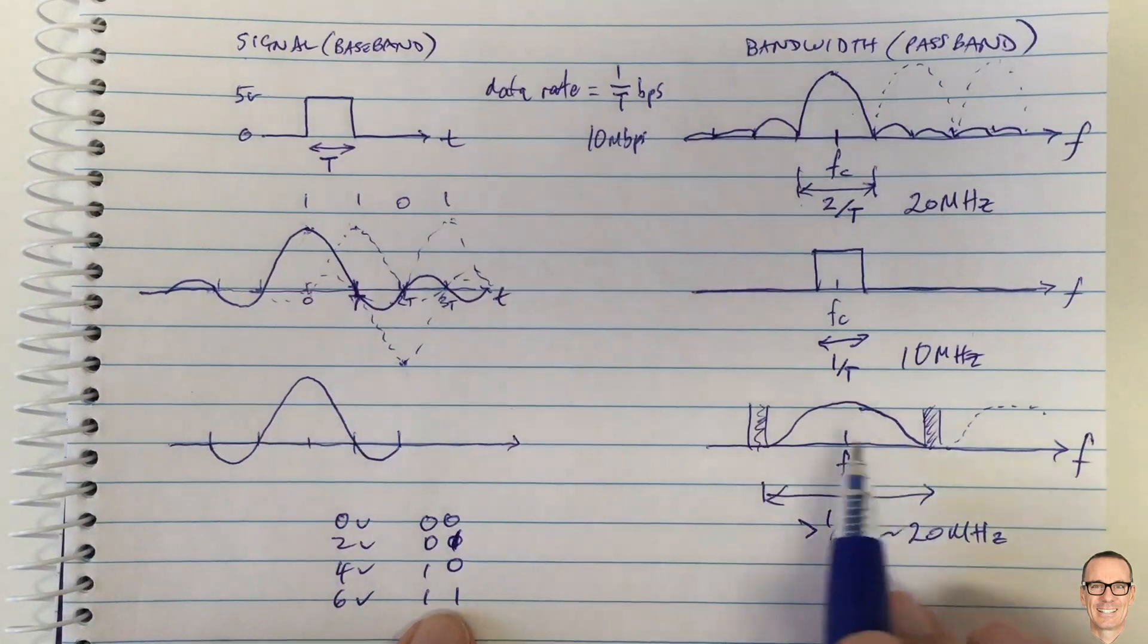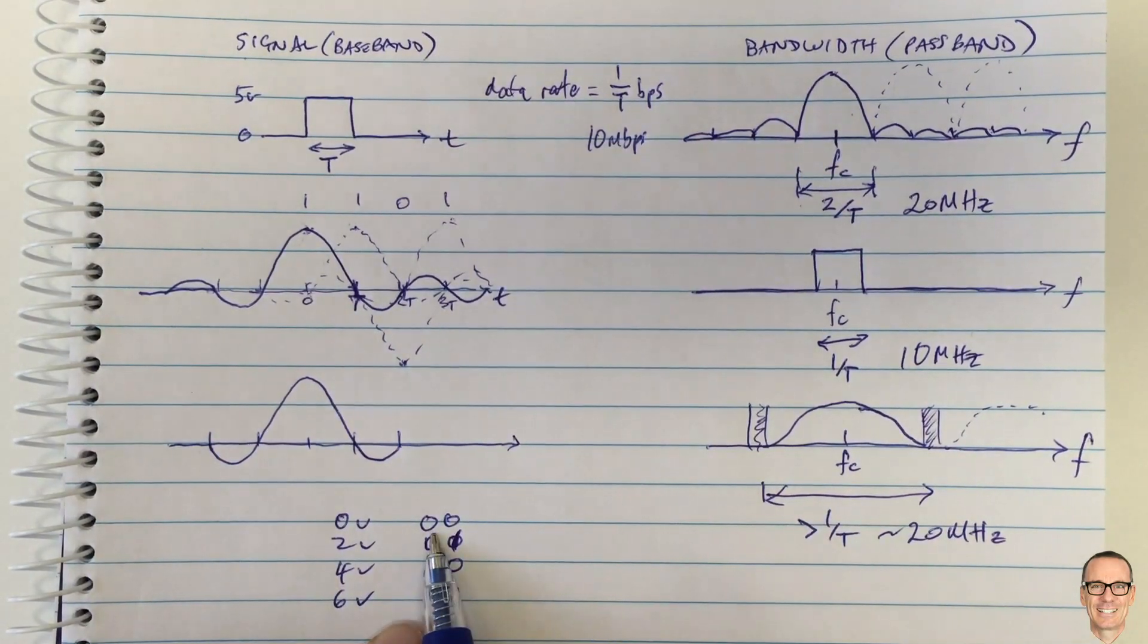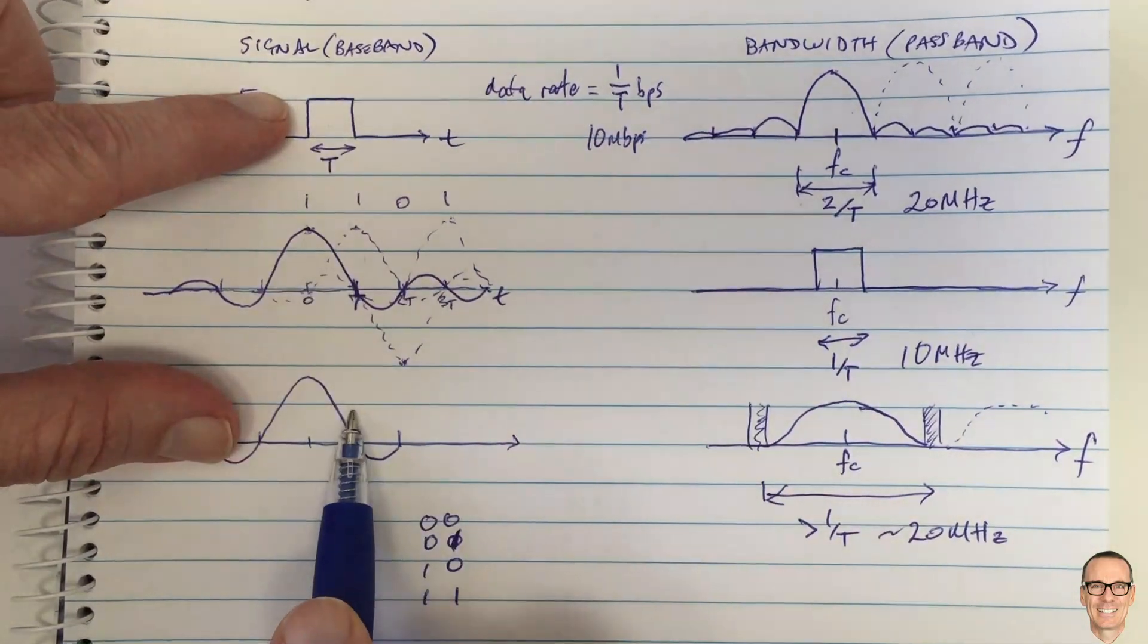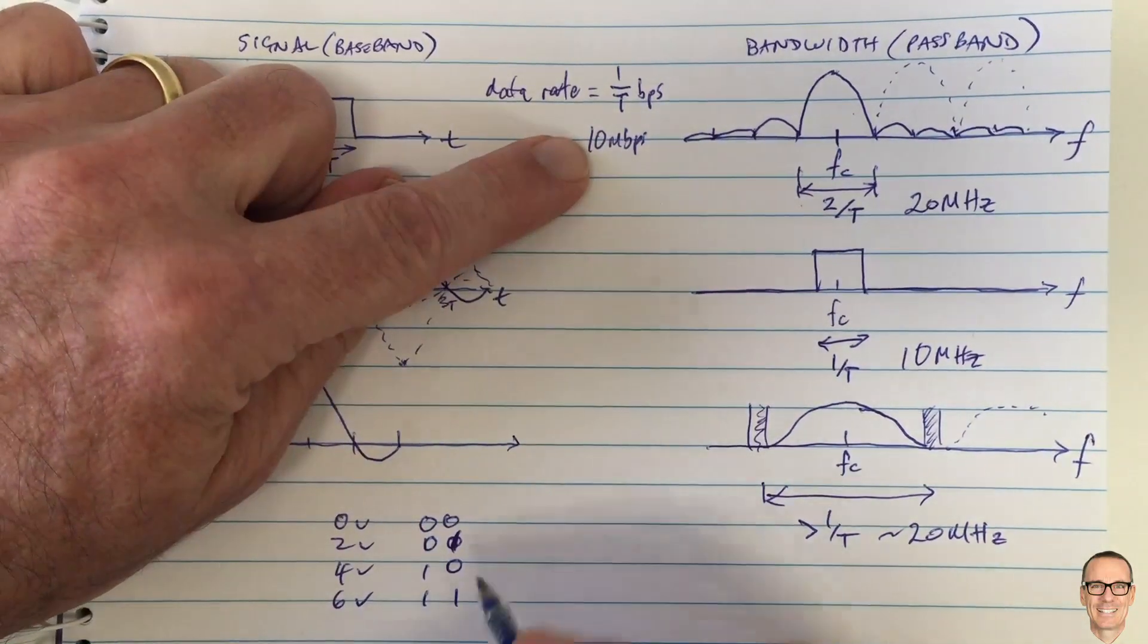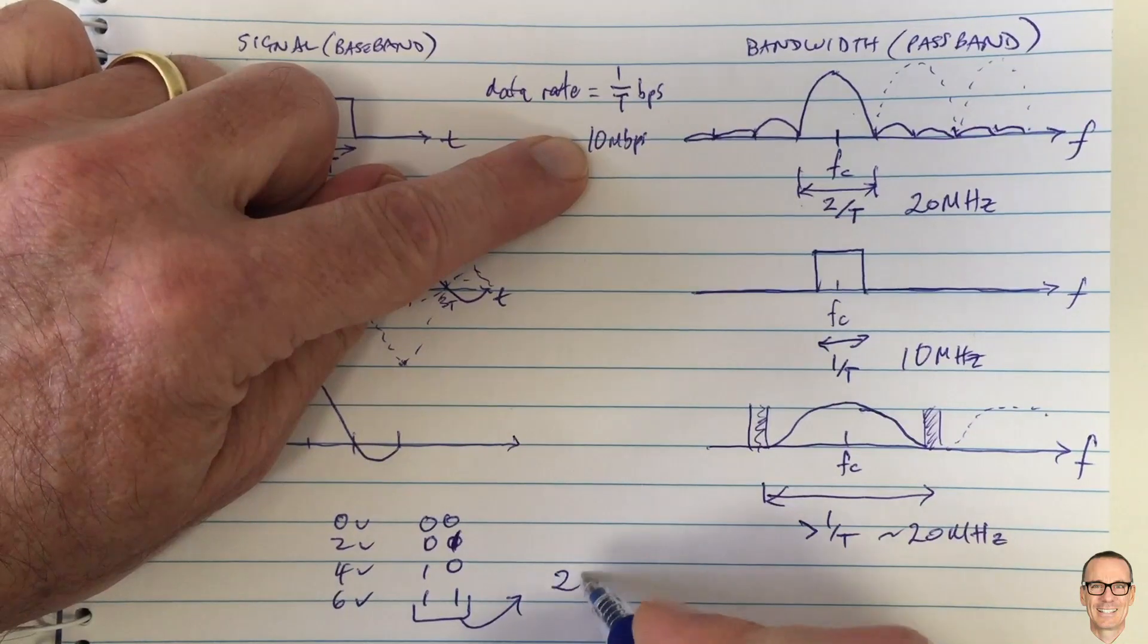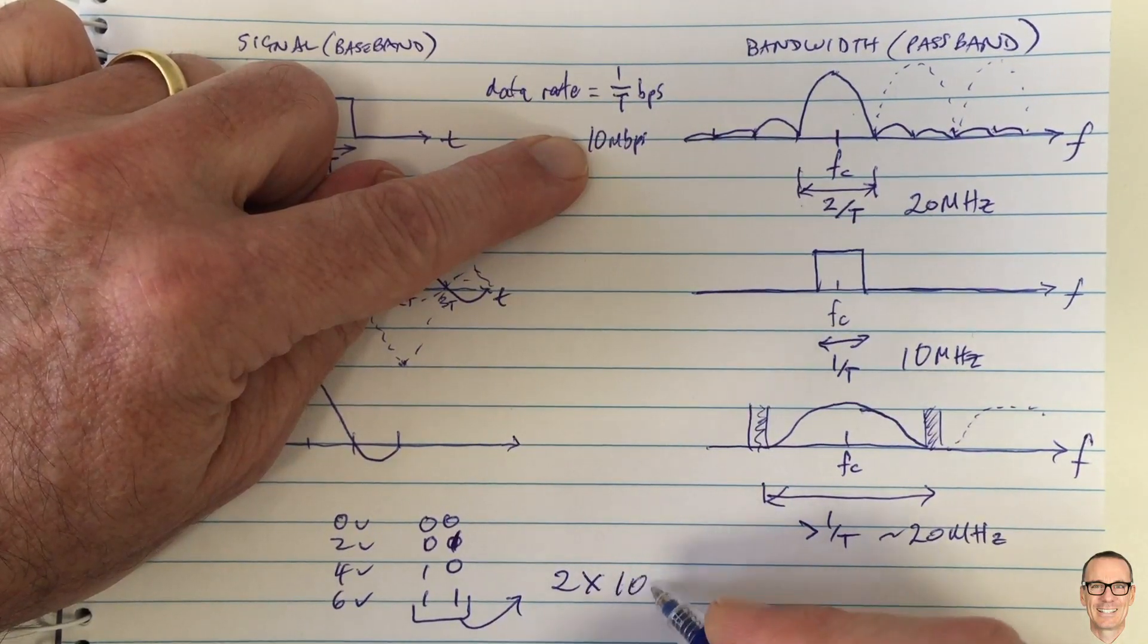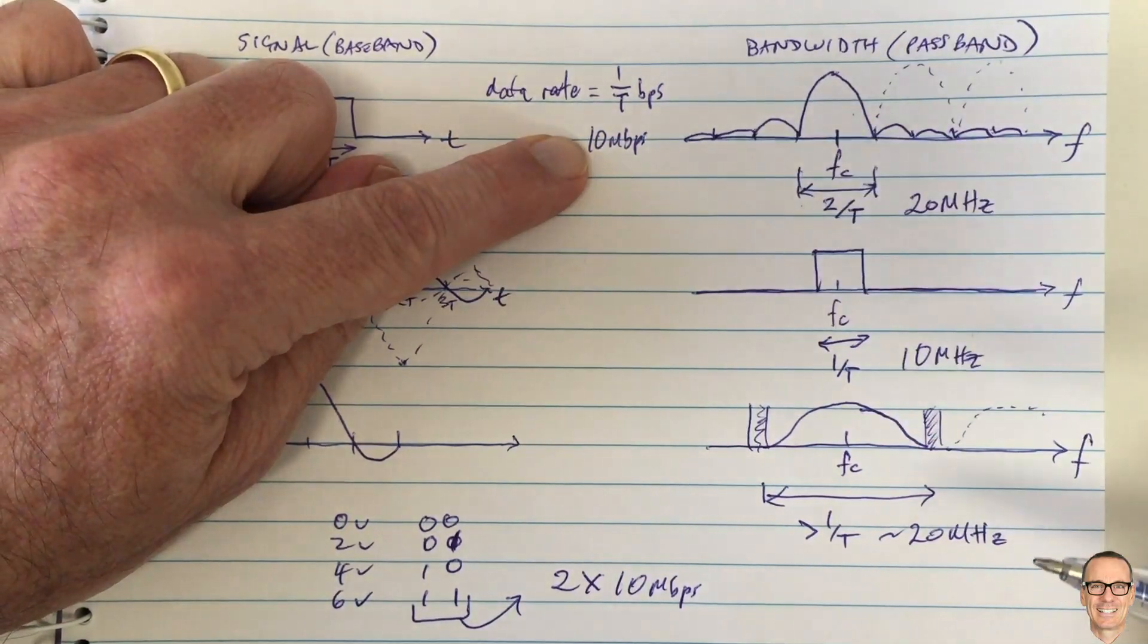So now in the same bandwidth we would now be sending two bits where previously in binary where there's only two levels you're only sending one bit. So this would multiply the data rate by two. In this case with two bits you get a two times increase in the data rate, so it would be two times ten megabits per second in our example of ten up here.